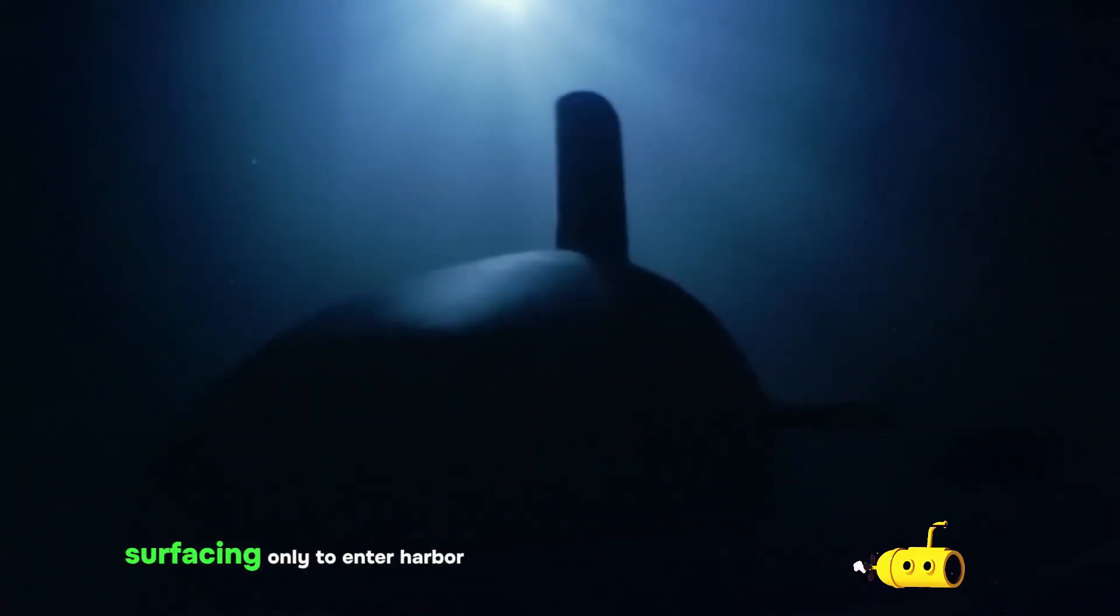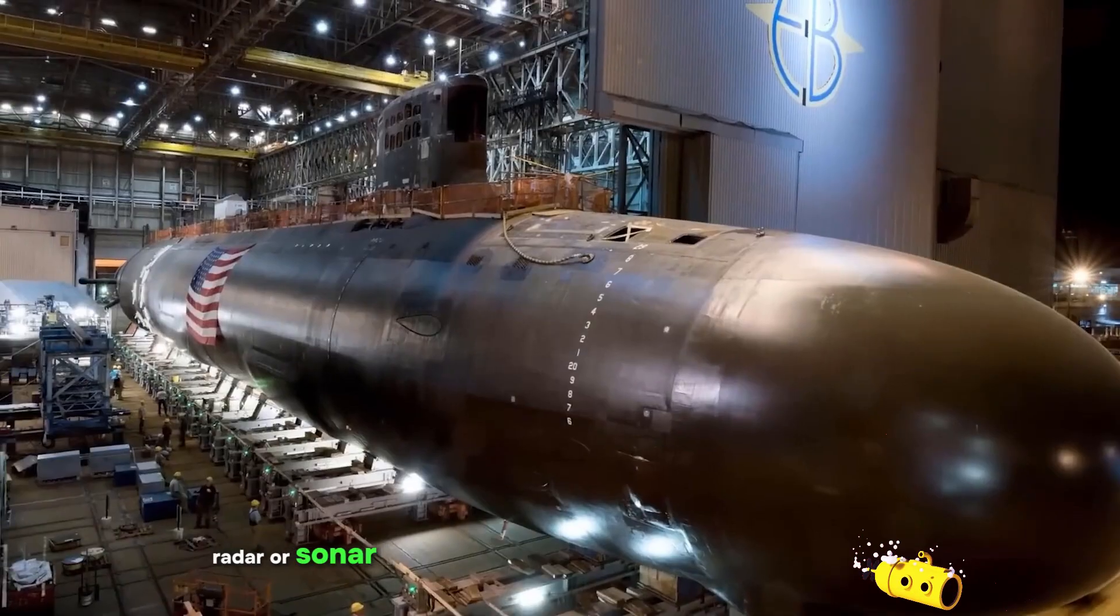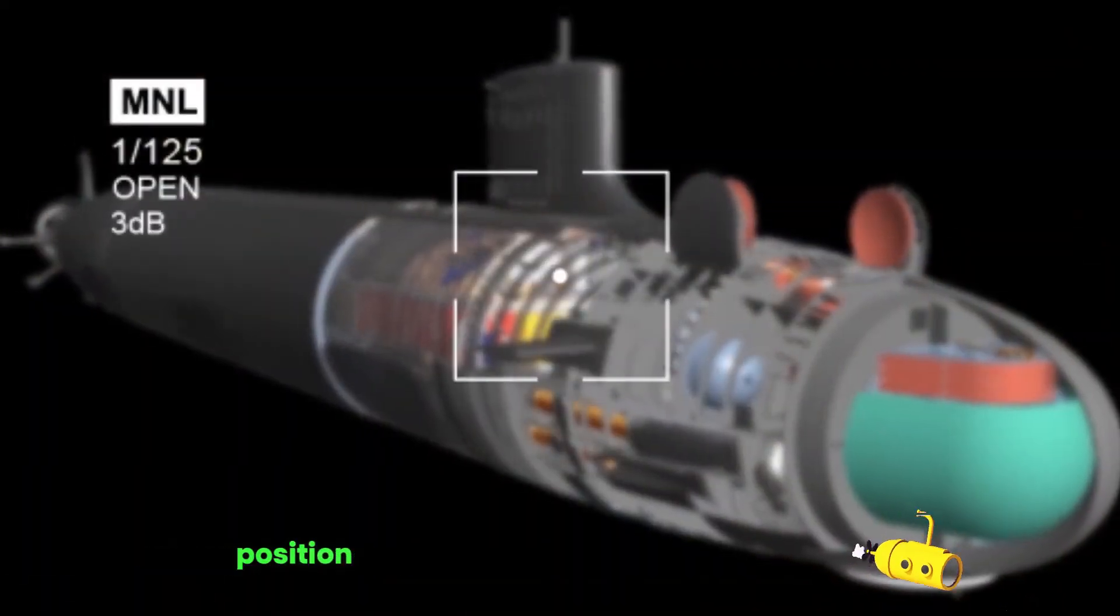Modern submarines almost always sail submerged, surfacing only to enter harbour. They rarely transmit on radio and almost never use active radar or sonar, which might reveal their own position.